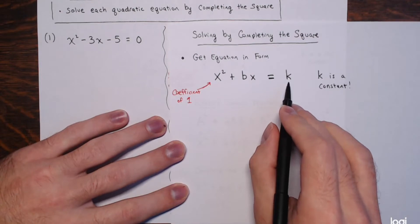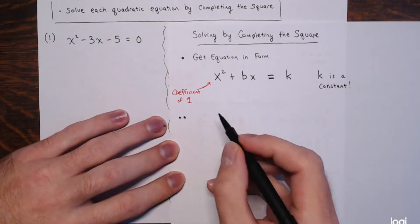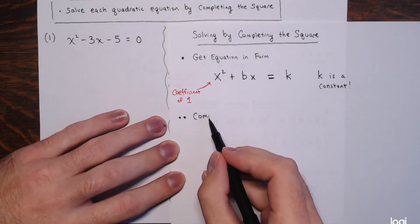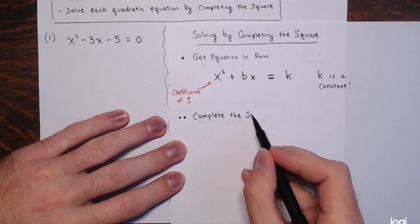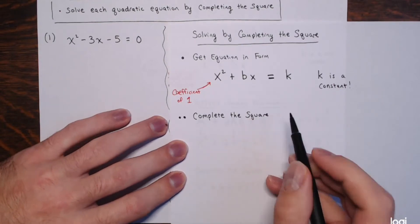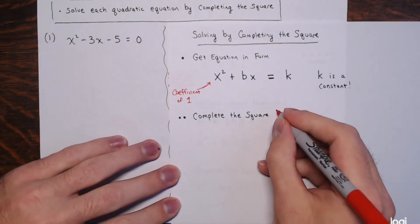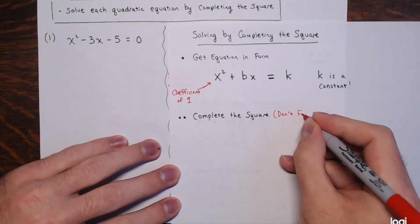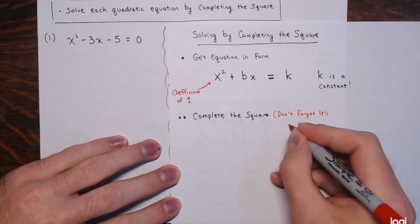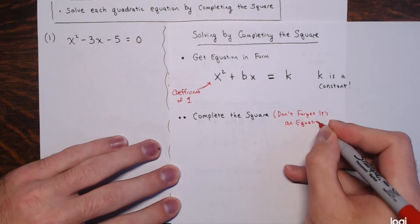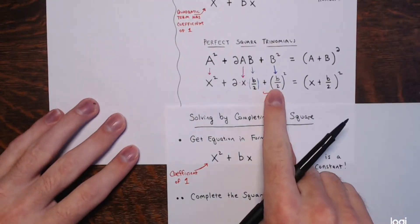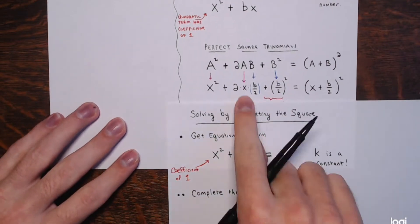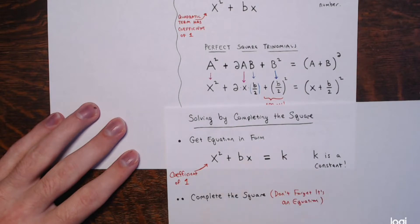Then, complete the square — but don't forget it's an equation. When you add (b/2)² to the left side to complete the square, you must also add it to the right side.